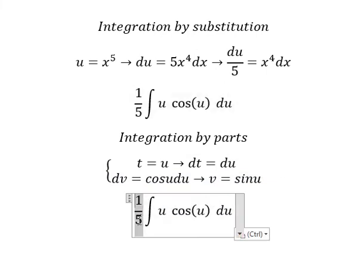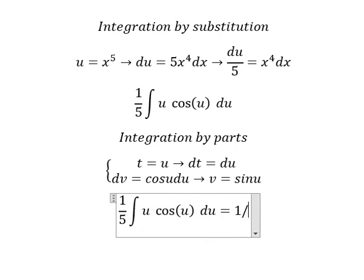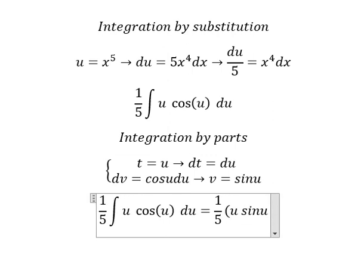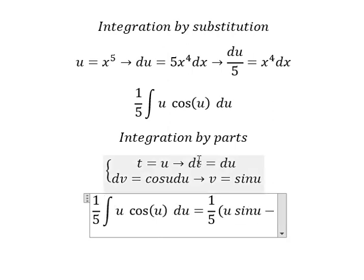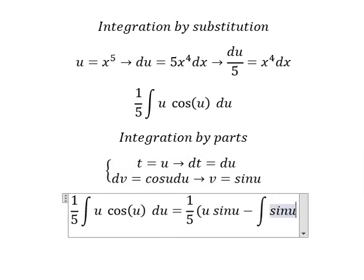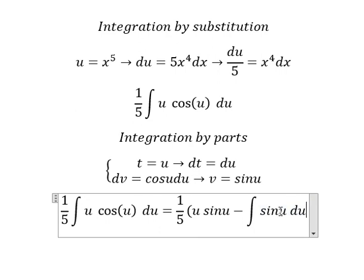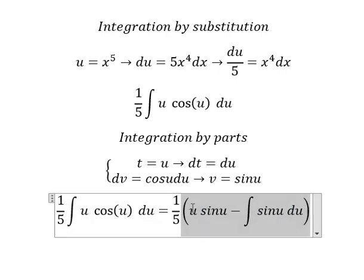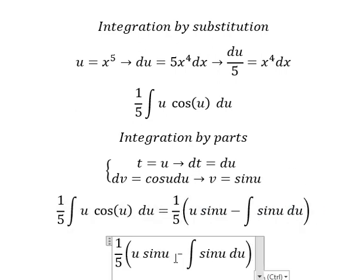We keep 1/5, and we have t multiplied by v, so we have u sine u, minus the integration of sine u du. The integration of sine u gives negative cosine u, and we add the constant C.